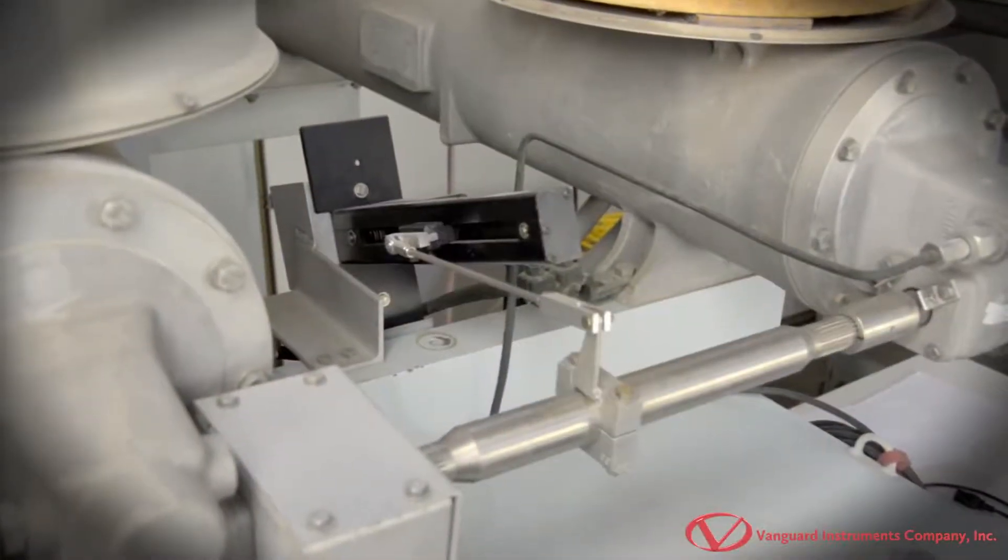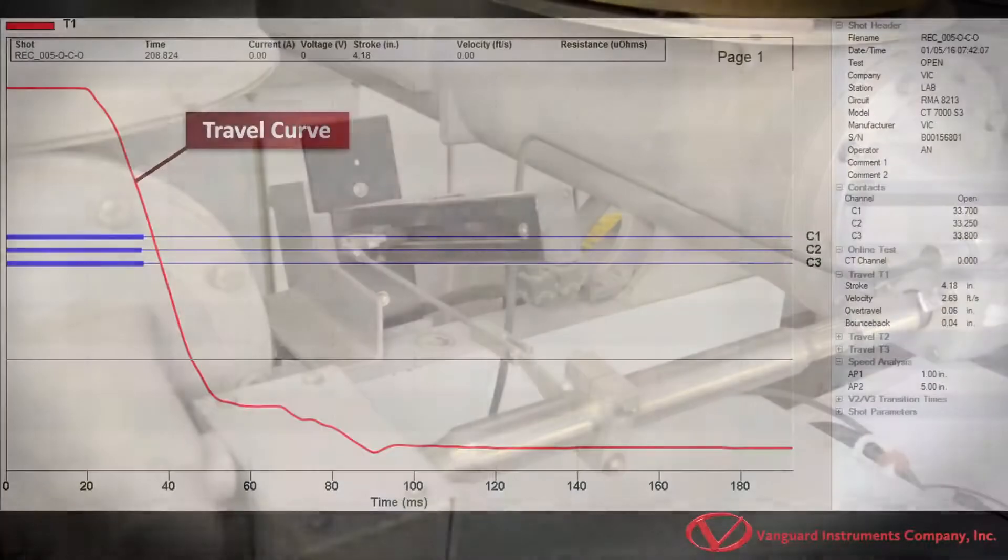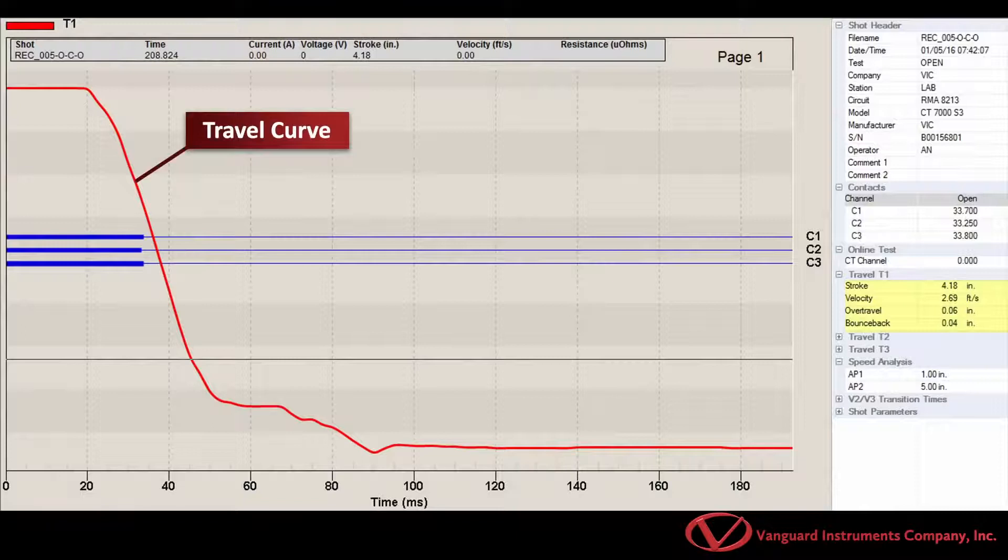Motion tests performed with a transducer are used to check the mechanism stroke, velocity, damping, and over-travel against the manufacturer's specifications.